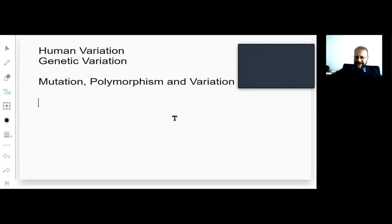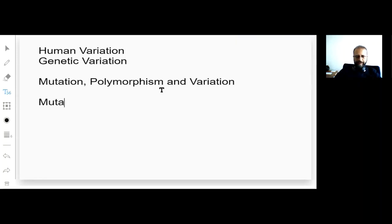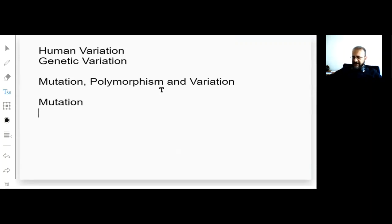Let's start with mutation. There are different descriptions for mutation, so even though it's one word, there are two or more explanations for it. First, the description or meaning of mutation in classic genetics is any change in the genetic material.